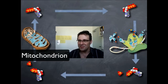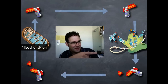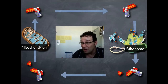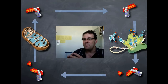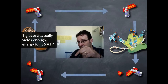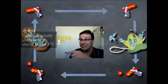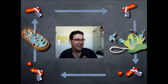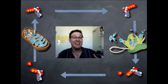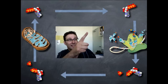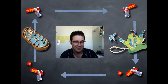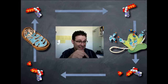Over here we have a mitochondrion, and over here we have a ribosome. Mitochondria take in glucose and break it down — that's a catabolic exergonic reaction, which releases energy, and that energy can be used to take one of these ADPs and phosphate ions and join a phosphate on to turn it into ATP. Over at the ribosome, its job is to build proteins out of amino acids — that's an anabolic endergonic process. It gets energy by taking one of these ATPs and breaking that third phosphate off to release energy, which is then used to join amino acids together to make a protein. So we end up with ADP and a phosphate.